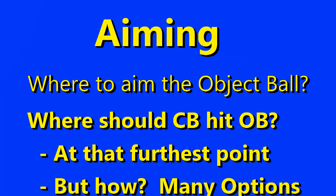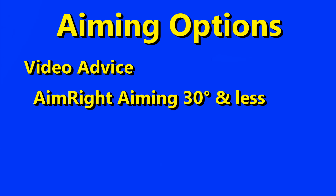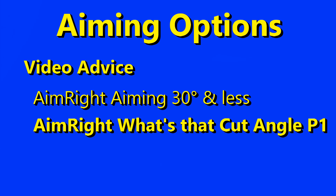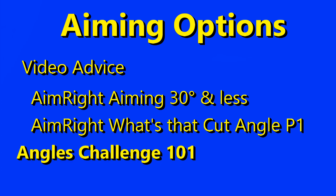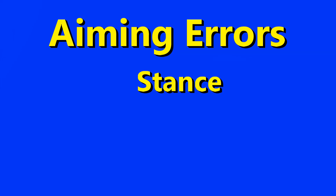There are many options. Watch my video on AimRight aiming 30 degrees and less and also my video AimRight What's That Cut Angle Part 1 to learn the definition of the cut angle of a shot. And if you play the Angles Challenge 101 game, you will get constant feedback on the correct sight picture for each cut angle, with the object ball always correctly being targeted to the correct pocket location. Given all of this, how do we actually proceed?